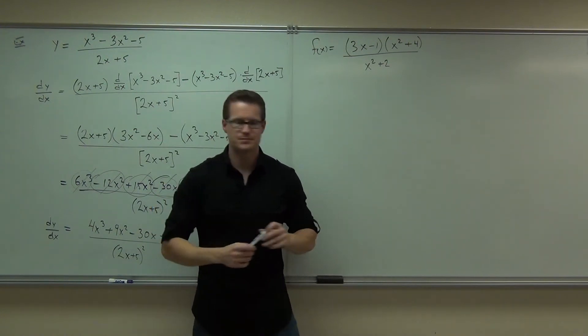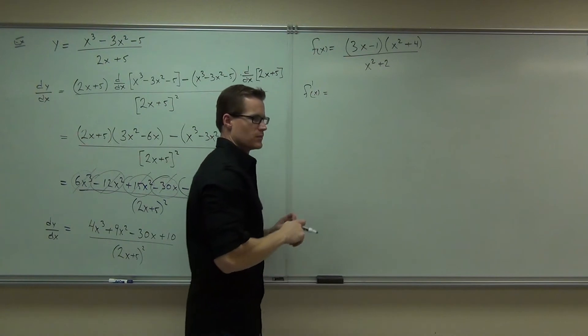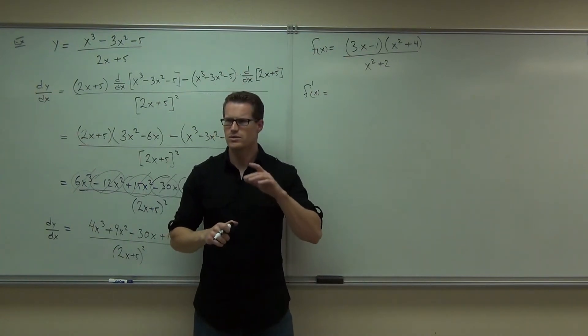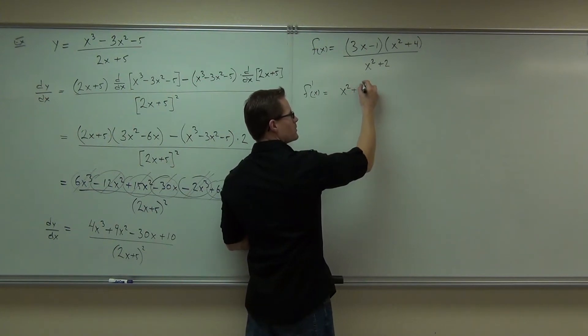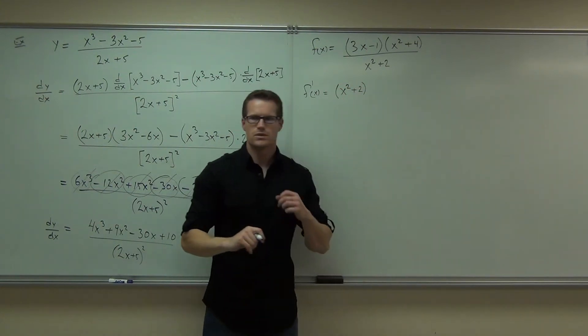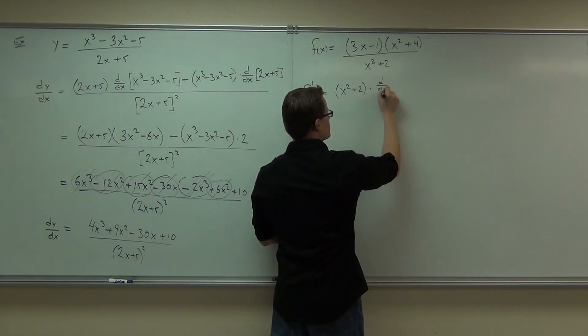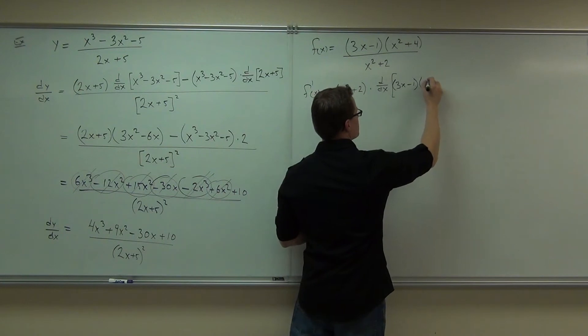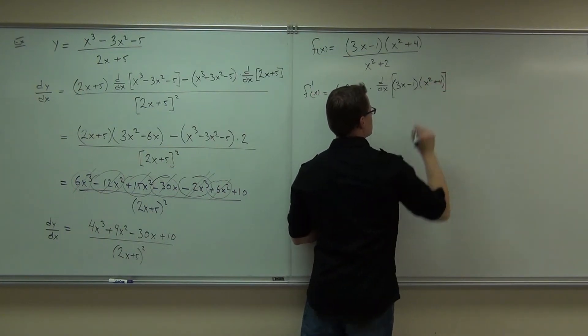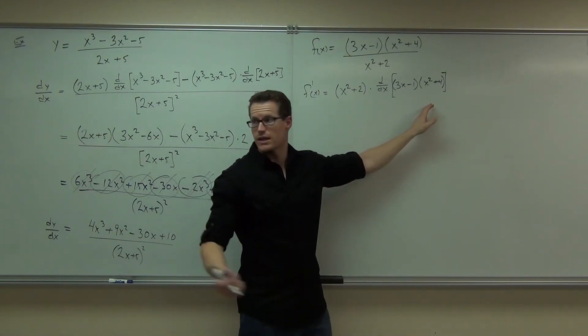Let's write out the quotient rule. What is it again? Low, low, low, what's this my low? Do I do anything to the low right now? Low, then what? D-high. So we're going to do d-high. Low, d-high, and then what? Minus.